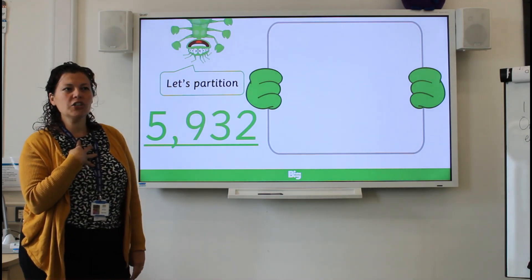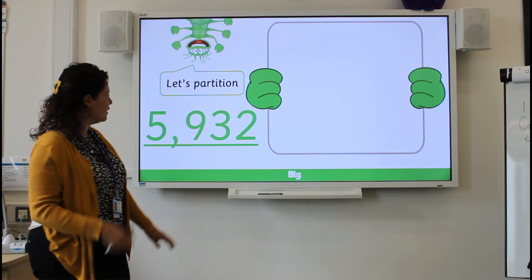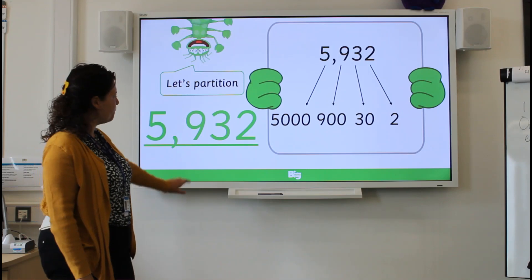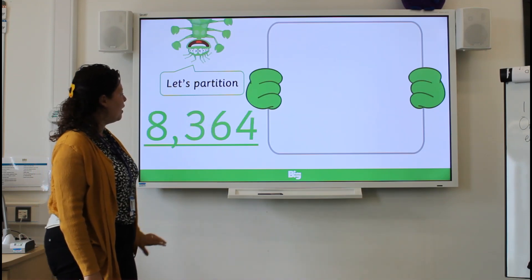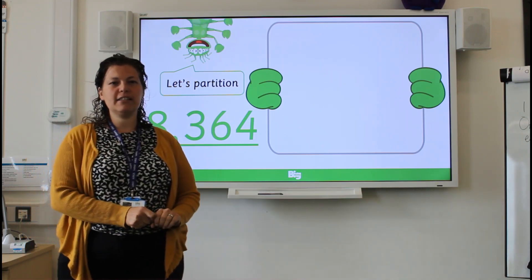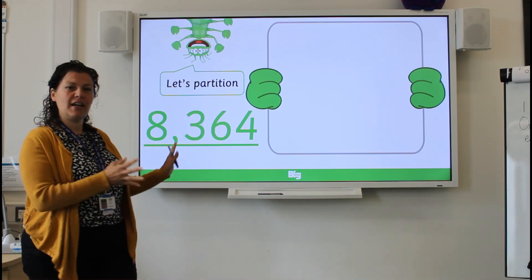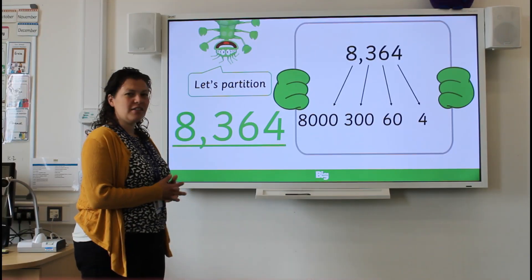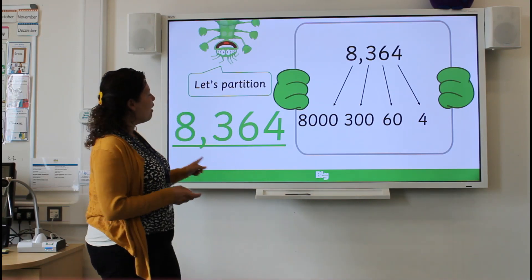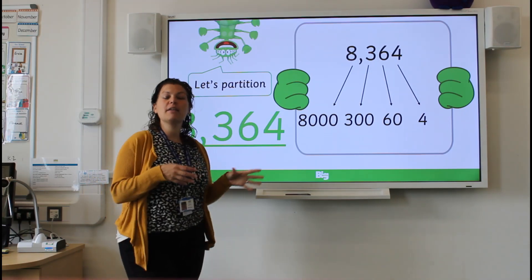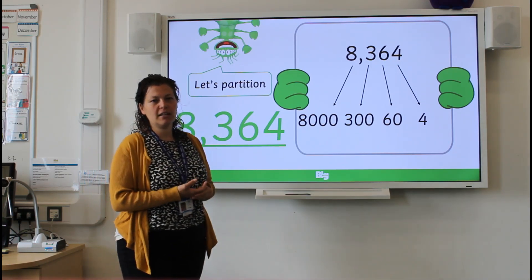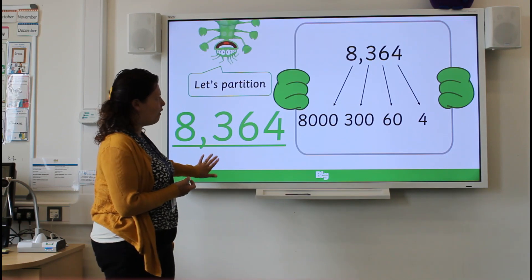Five thousand nine hundred and thirty-two — well done! Here's another one for you — eight thousand three hundred and sixty-four. Pause, have a go, check your answer. Well done! Just before we go on to our challenge: the reason we learn about partitioning is that it makes it easier when adding two-, three-, and four-digit numbers together later on. Okay, on to our challenge!